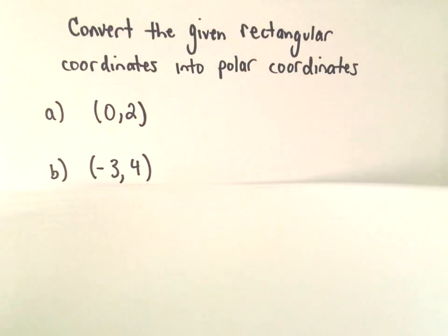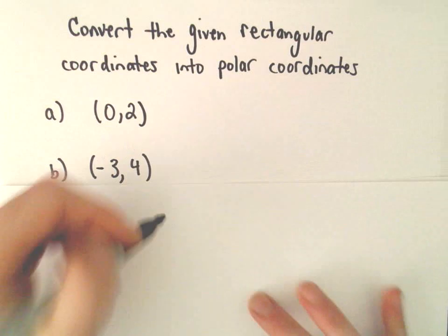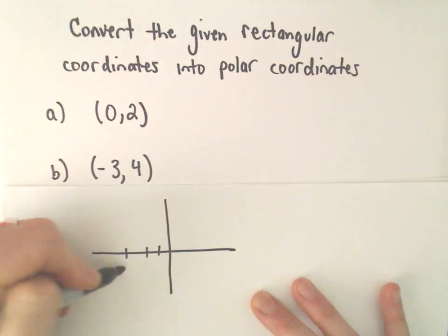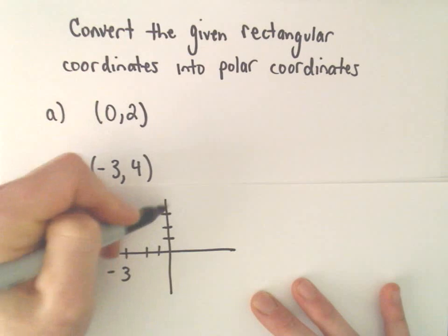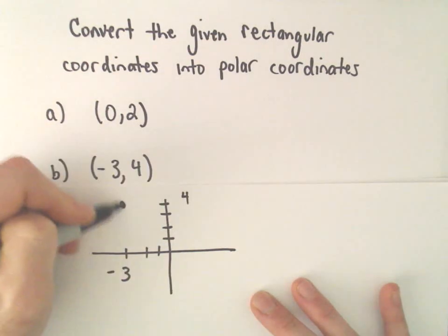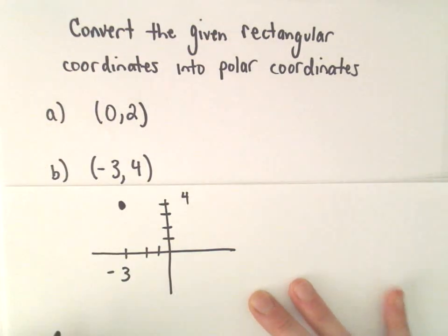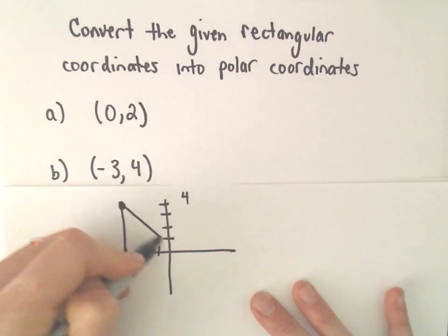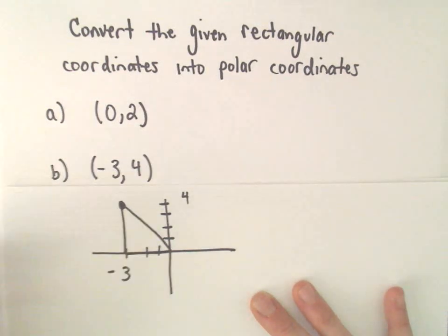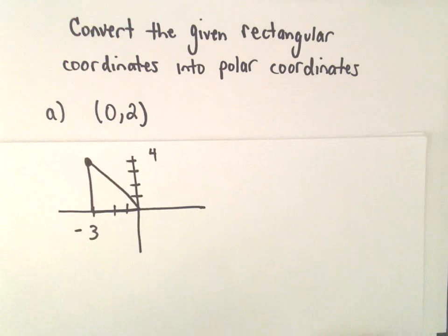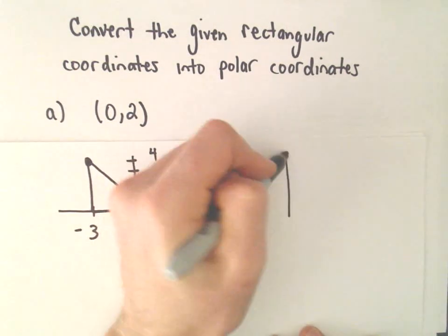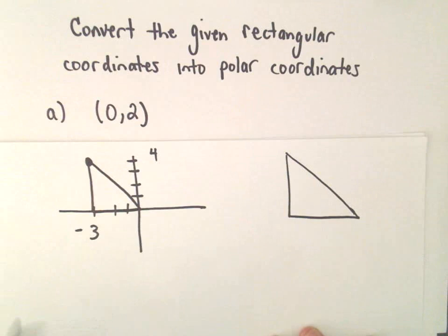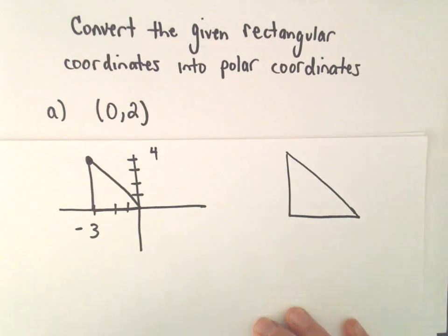So let's see, negative 3, comma 4. So there's negative 1, negative 2, negative 3, and then up 1, 2, 3, 4. So there's our point again, just like before. Okay, so I'm just going to make my little triangle here. I'm going to make my little triangle.